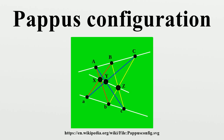The Pappus configuration can also be derived from two triangles XCC' and YBB' that are in perspective with each other in three different ways, together with their three centers of perspectivity Z, A, and A'. The points of the configuration are the points of the triangles and centers of perspectivity, and the lines of the configuration are the lines through corresponding pairs of points.